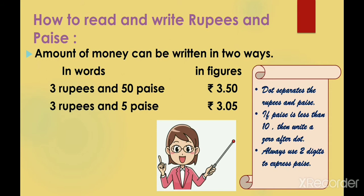If paise is less than 10, then write a 0 after the dot. And there are always 2 digits to express paise. Remember 3 important points: First, the dot separates the rupees and paise. Second, if paise is less than 10, then write a 0 after the dot. Third, always use 2 digits to express paise.